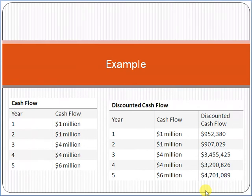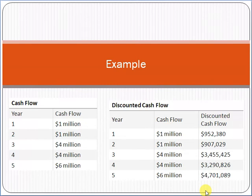In the PMP exam, they generally don't ask you to calculate the discounted cash flow. They check your concept and give you scenario-based questions. You don't need to memorize the formula; you basically need to understand the concept — that discounted cash flow is a project selection methodology that gives you insight into the basis for selecting a particular project, based on the projected value of your investment.